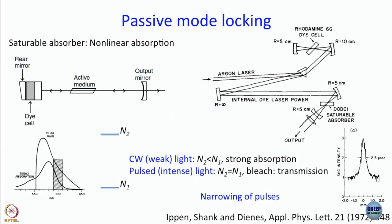We will continue our discussion of mode locking and then go on to something called cavity dumping. We have discussed active mode locking using a mode locker by applying sound frequency using the Raman-Nath regime. And then we moved on to talk about passive mode locking, where what is used is a saturable absorber. We finished our discussion saying a saturable absorber can not only produce pulses, but can also narrow them down.